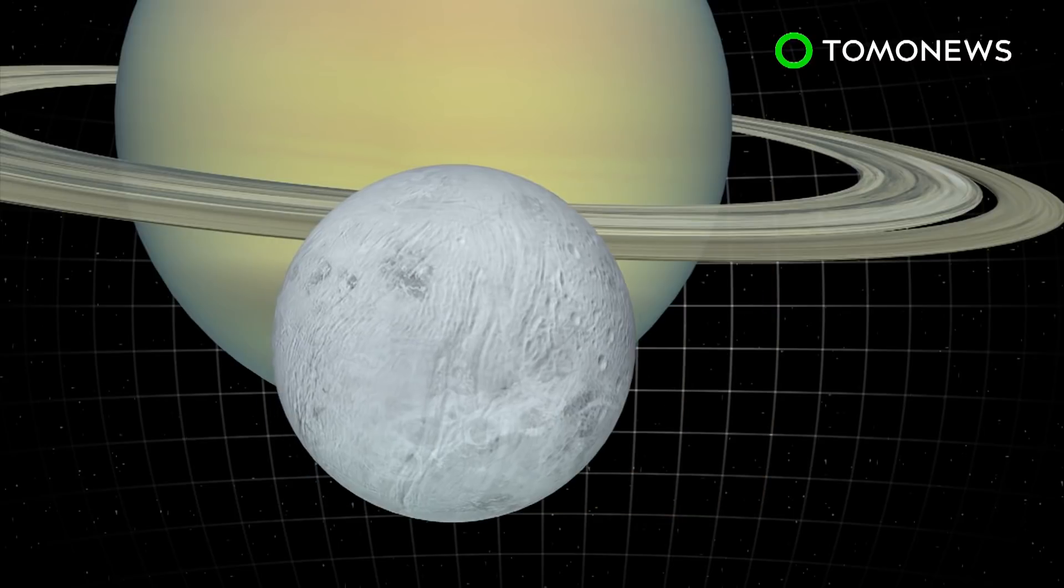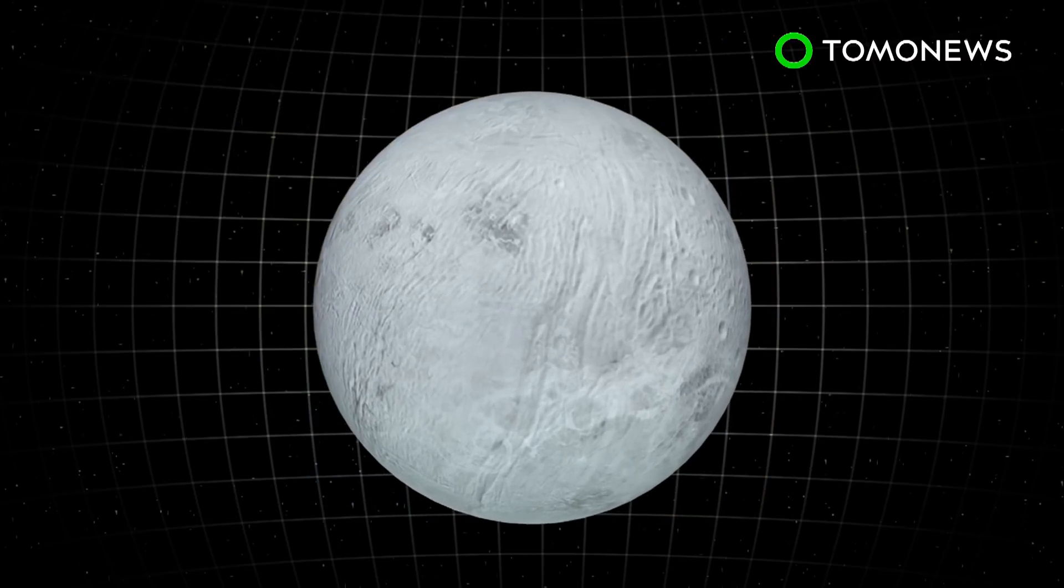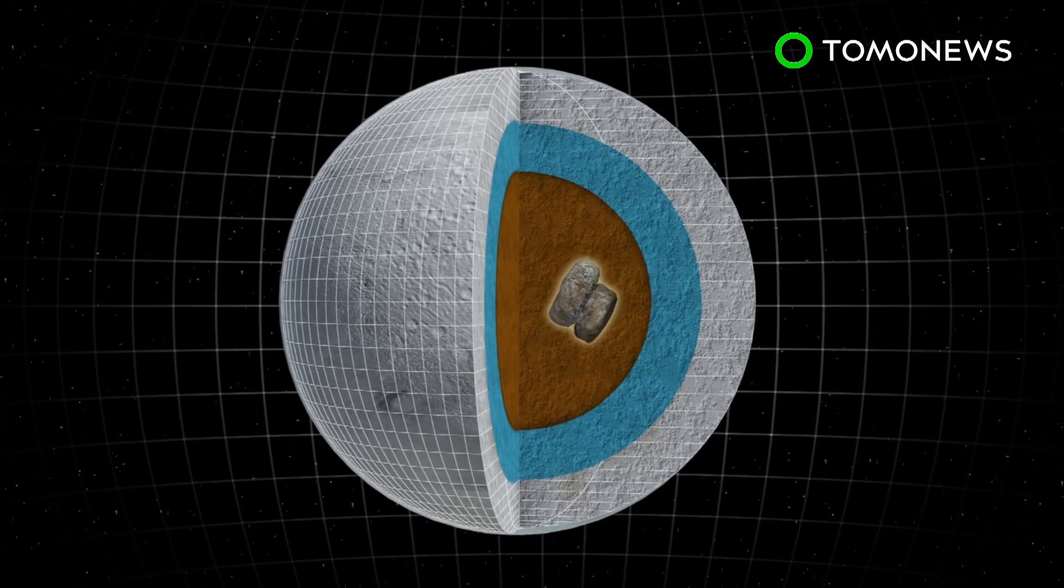According to the European Space Agency, this tidal heating is primarily caused by the gravitational pull of Saturn. NASA previously said this particular moon has all the ingredients needed for life to exist.